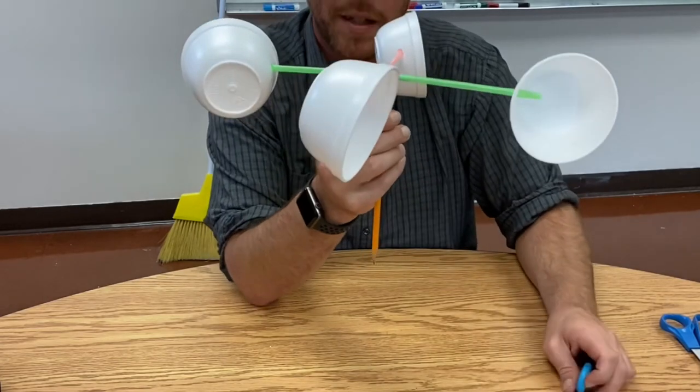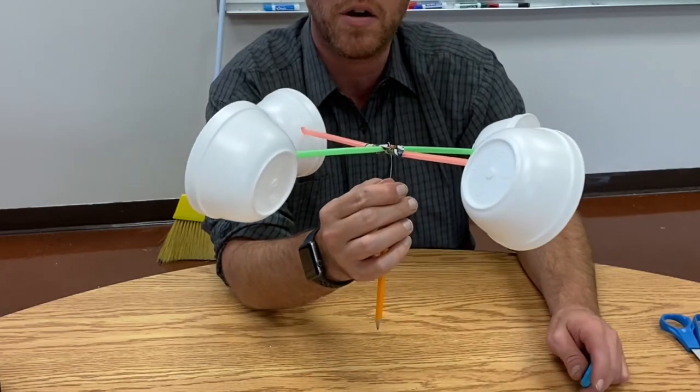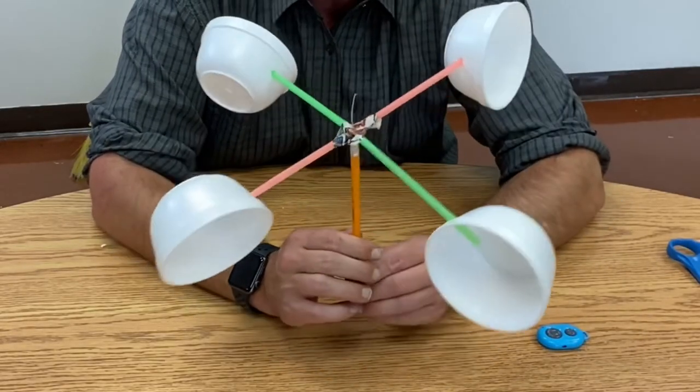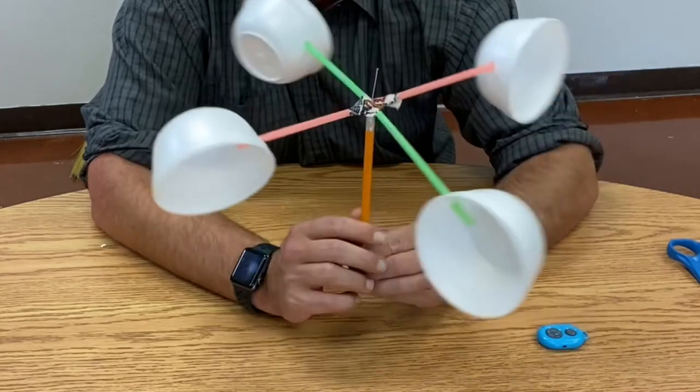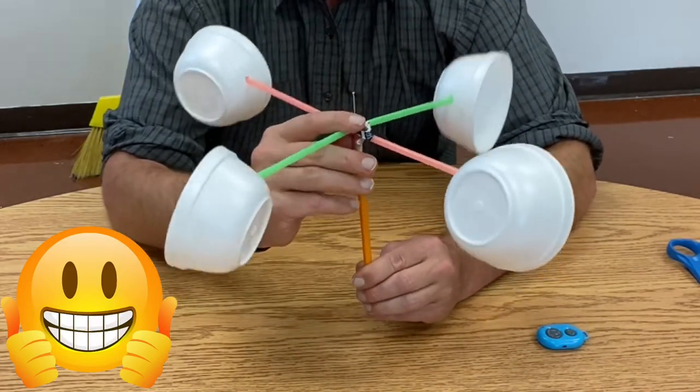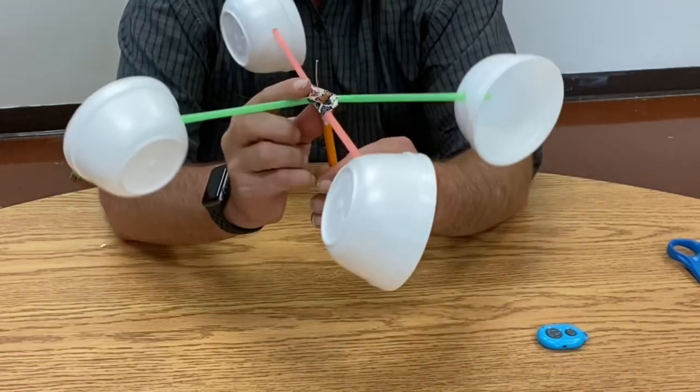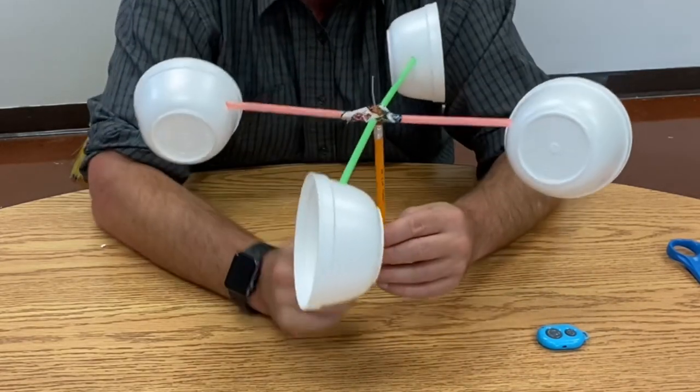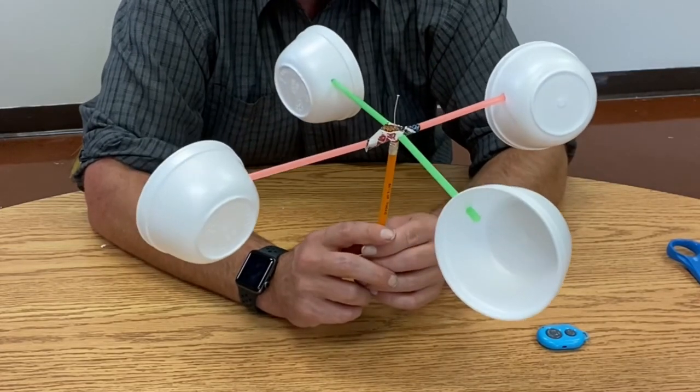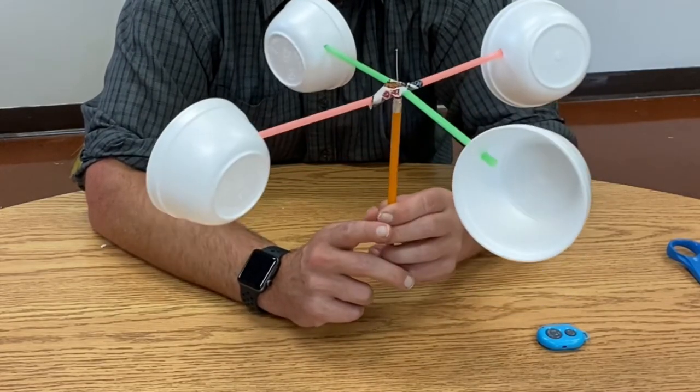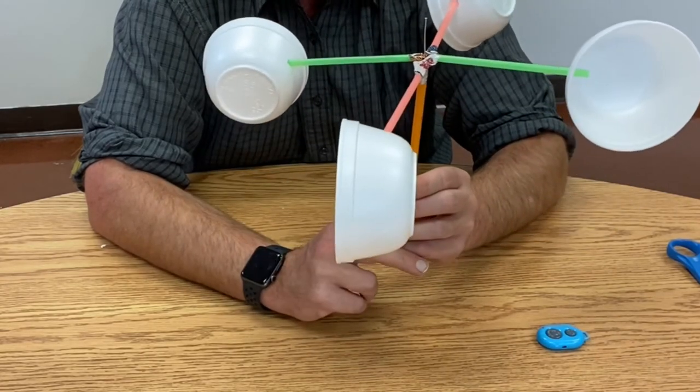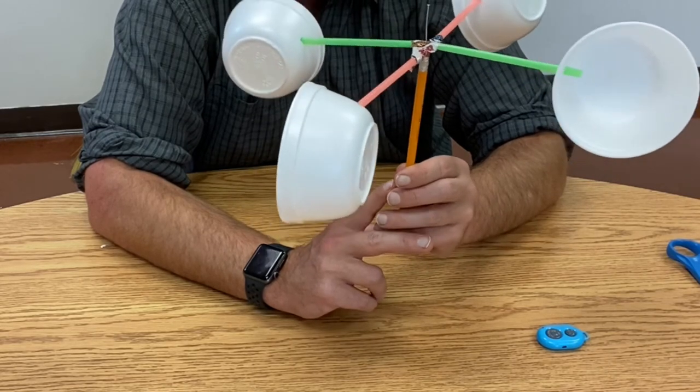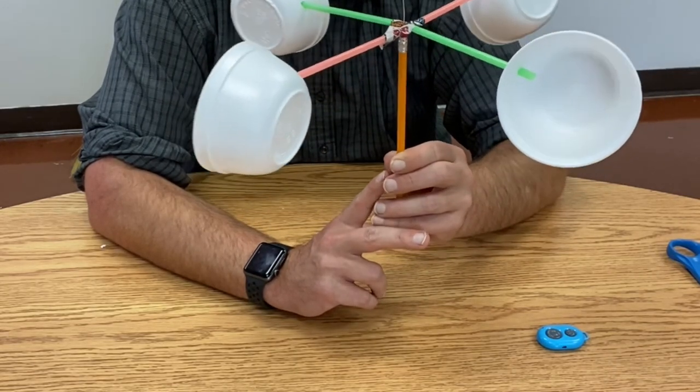So once it's attached, you can already see it's starting to spin. When we add air to it, it begins to spin. I want you to imagine this out in a storm or on a windy day. It's going to spin really, really fast. On a day like right now where there's not much breeze, it's not going to spin that fast. But on days where it is really, really windy out there, it is going to spin.